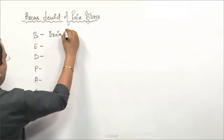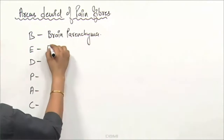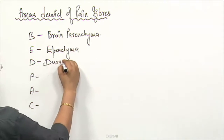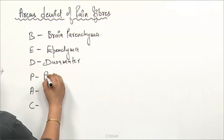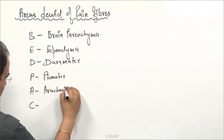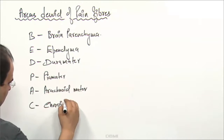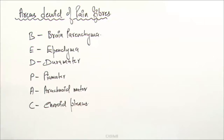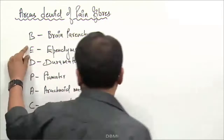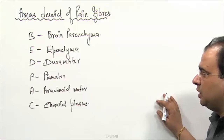In the mnemonic BED PAC: B represents brain parenchyma, E is ependyma — the ventricular lining, D is dura mater, P is pia mater, A is arachnoid mater, and C is choroid plexus. These are the areas devoid of pain fibers.